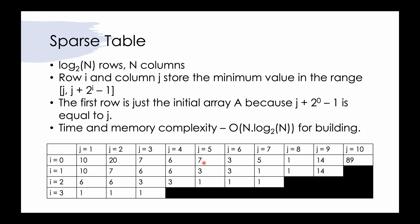Computing the value for any cell is O(1). The first row is just the initial array. To compute the second row, for j equal to 1 and i equal to 1 we just combine the answer for (i=0, j=1) and (i=0, j=2). For j equal to 2 and i equal to 1, we combine the answer for (i=0, j=2) and (i=0, j=3).